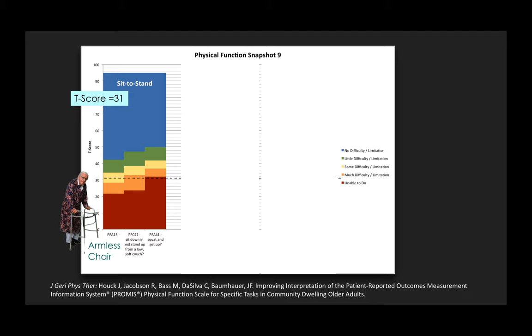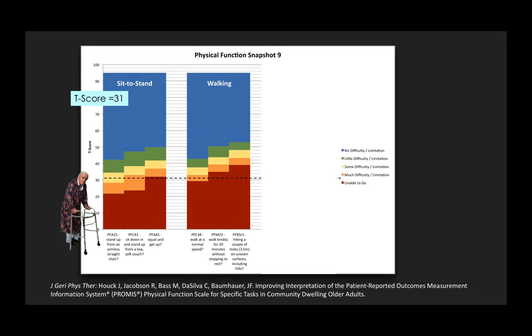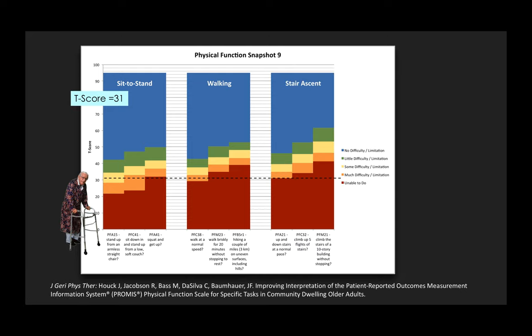The first one is sitting up from an armless chair. The second task is sitting up from a low couch. And the third one is to squat and get up. This same T-score is associated with much difficulty or unable to do for most tasks with only walking at a normal speed being within the range of much difficulty. And stair ascent for all the tasks are in the red or they're unable to do. Also notice that the items within the sit-to-stand, walking, and stair ascent have this step effect, which means that they scale quite nicely, allowing this measure to detect change.